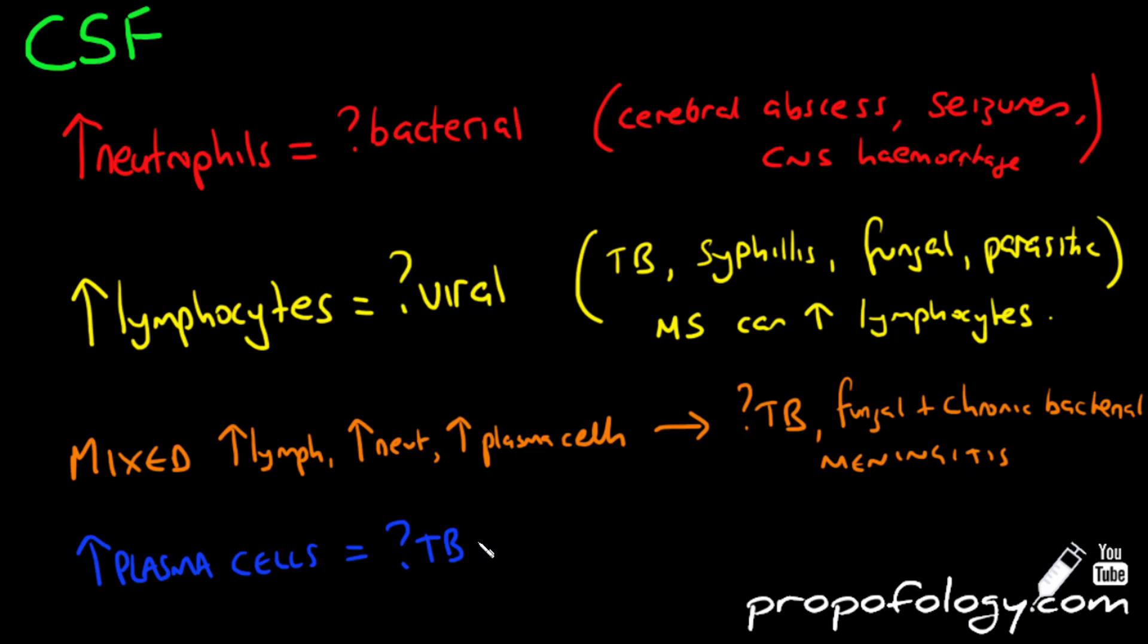If you see an increase in plasma cells, this is also a feature of TB meningitis. You can also see leukemic cells, and that can indicate meningeal infiltration by hematological malignancies such as leukemia itself.